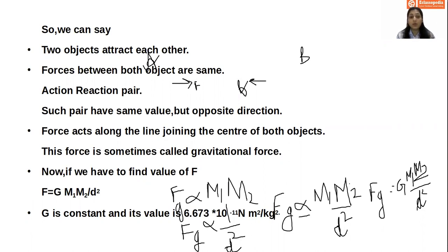Now, if we have to find value of F, we can find out F is equal to G M1 M2 by d square. G is the constant and its value is 6.673 into 10 raised to the power minus 11 Newton meter square per kilogram square.